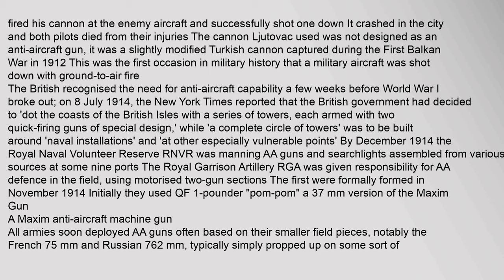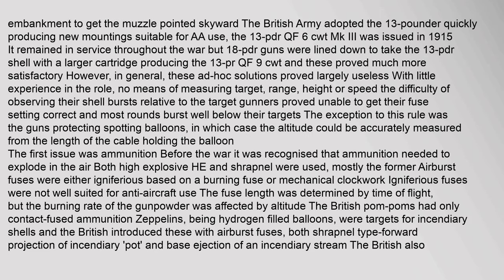The British recognized the need for anti-aircraft capability a few weeks before World War I broke out. On 8 July 1914, the New York Times reported that the British government had decided to dot the coasts of the British Isles with towers, each armed with two quick-firing guns of special design, with a complete circle of towers to be built around naval installations. By December 1914, the Royal Naval Volunteer Reserve was manning double-A guns and searchlights at some nine ports. The Royal Garrison Artillery was given responsibility for double-A defense in the field using motorized two-gun sections, formally formed in November 1914.